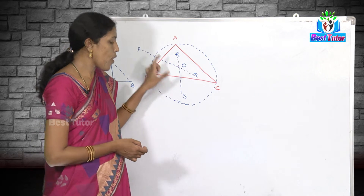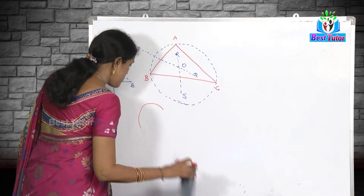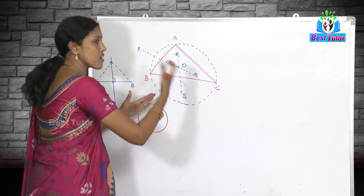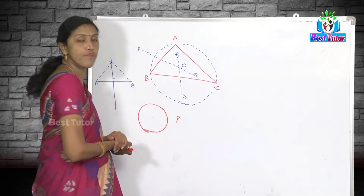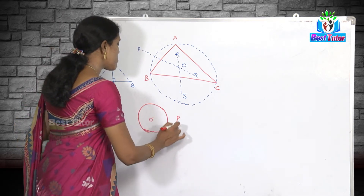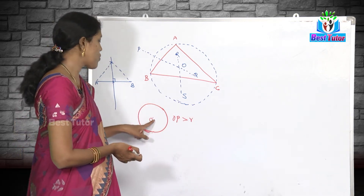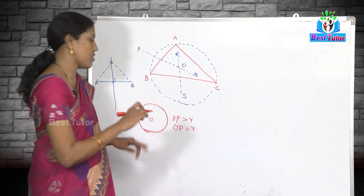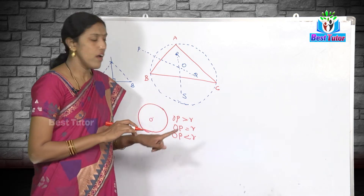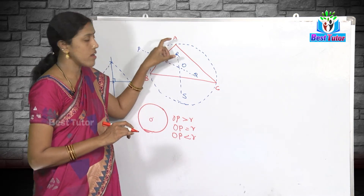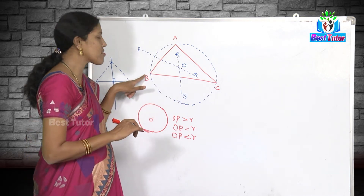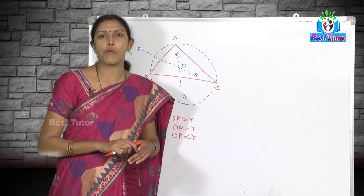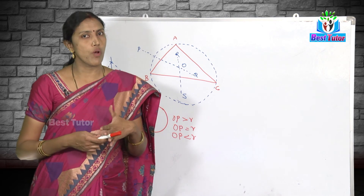A point lies on a circle — as we learned when going through parts of the circle in earlier videos — if the distance from the center O to the point equals the radius. If OP is greater than the radius, the point lies outside; if OP equals the radius, it lies on the circle; if OP is less than the radius, it lies inside. Using this concept, since OA equals OB equals OC, points A, B, and C all lie on the circle. Only one circle is possible through three non-collinear points. In the coming videos we are going to learn about many more properties of circles. Thank you.